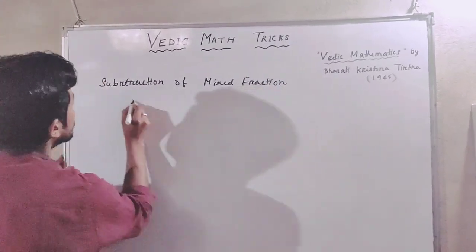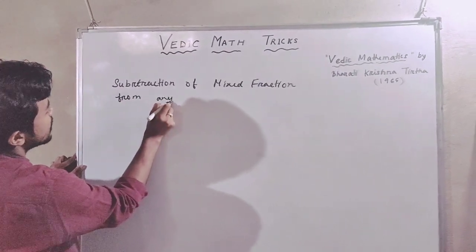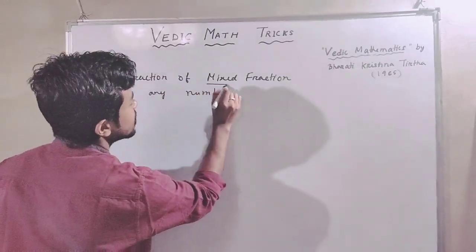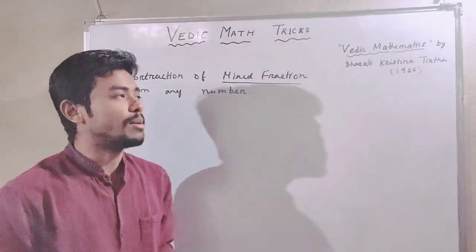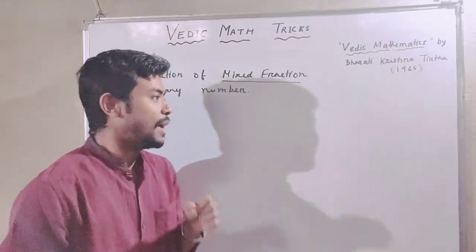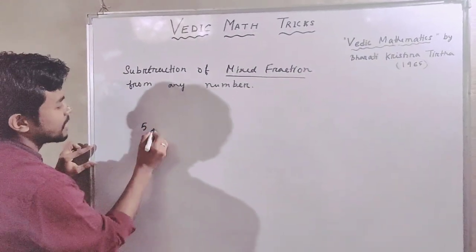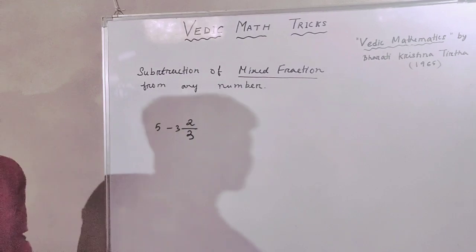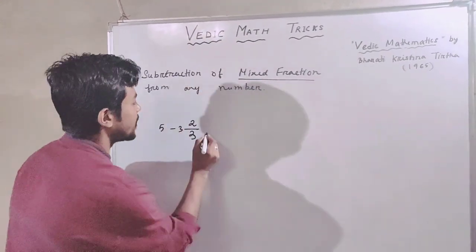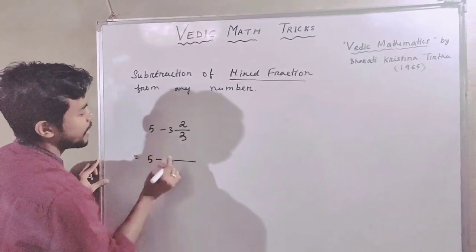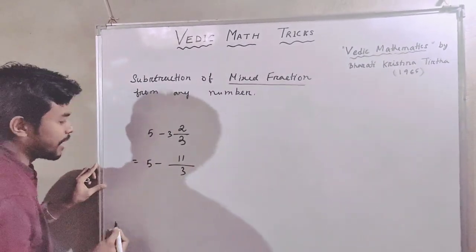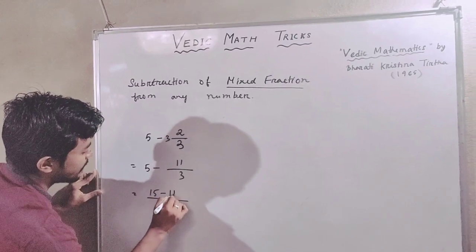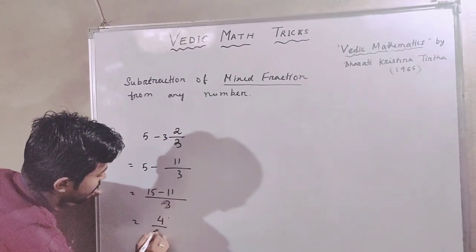Subtraction of mixed fractions from any number. For example, 5 minus 3 and 3 by 3. We have to put the number on the denominator of 3. So 15 minus 11 is equal to 4 divided by 3.